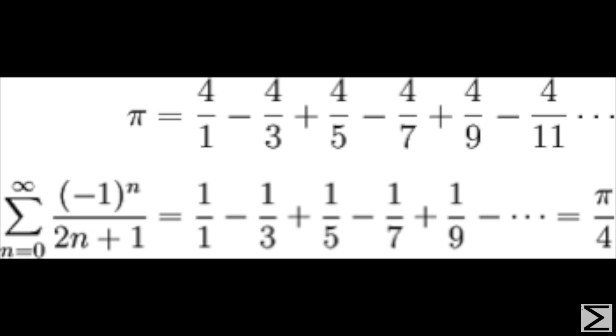This can be simplified as the infinite sum of negative 1 to the n minus 1 power divided by 2n minus 1 for all positive integers.